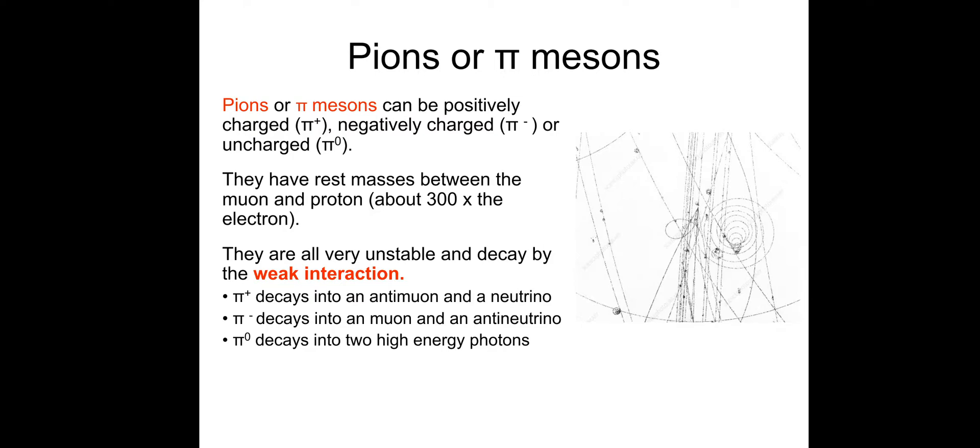They're all very unstable and decay by the weak interaction. Pi plus decays into an anti-muon and a neutrino. Pi minus decays into a muon and an anti-neutrino. And Pi naught decays into two high-energy photons. There's a lot of information to take now.